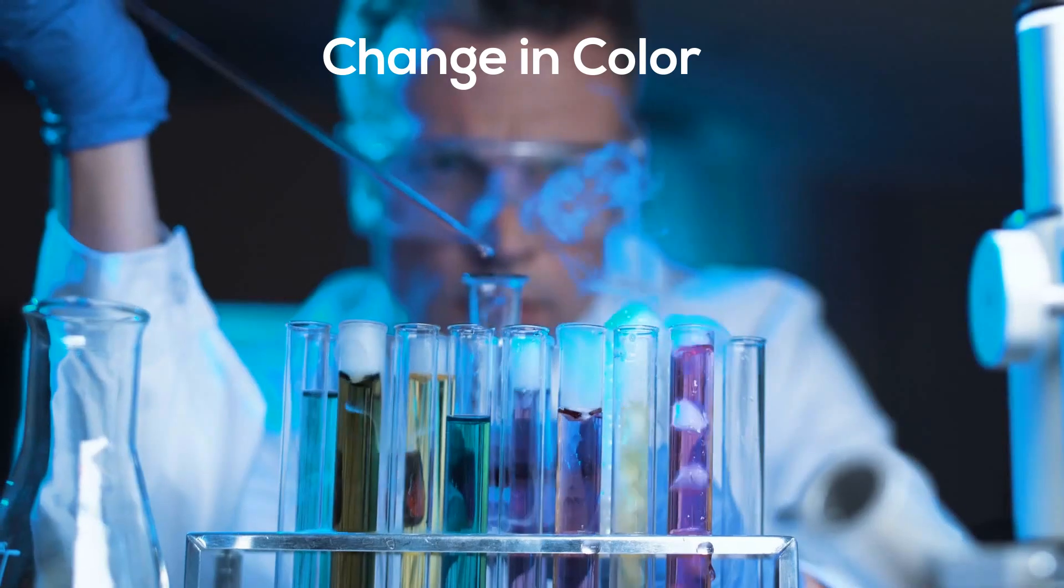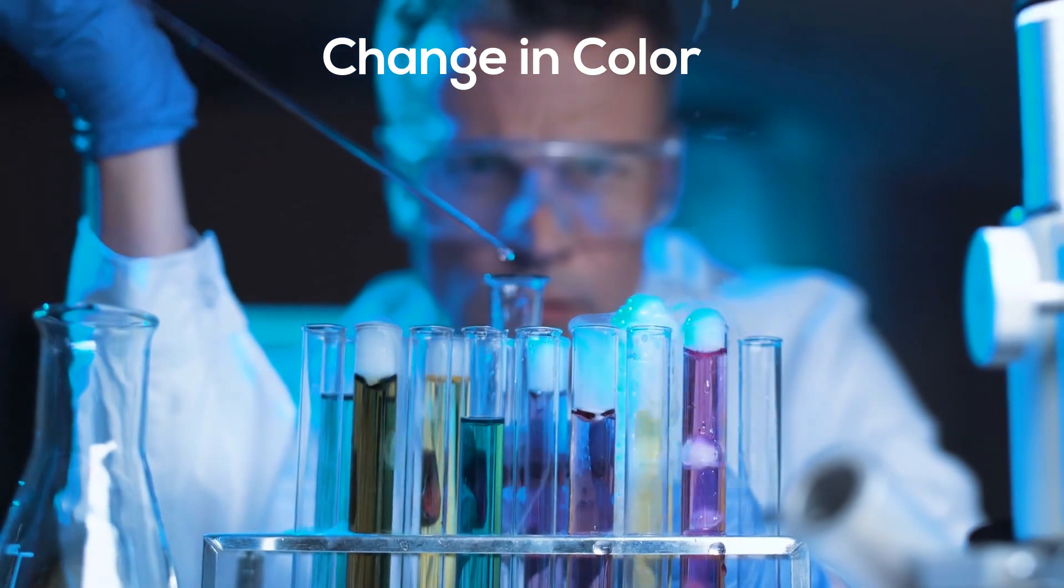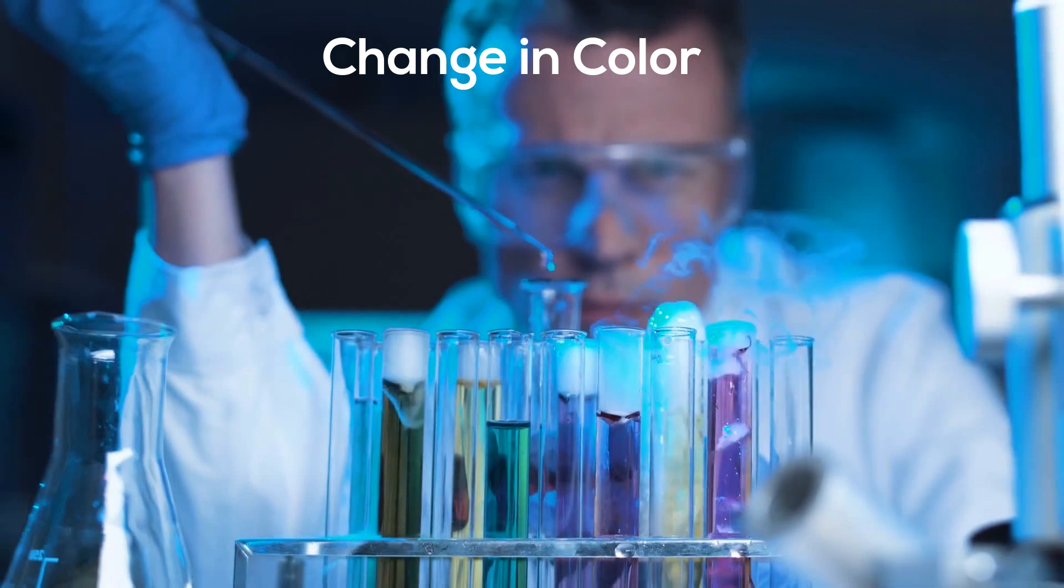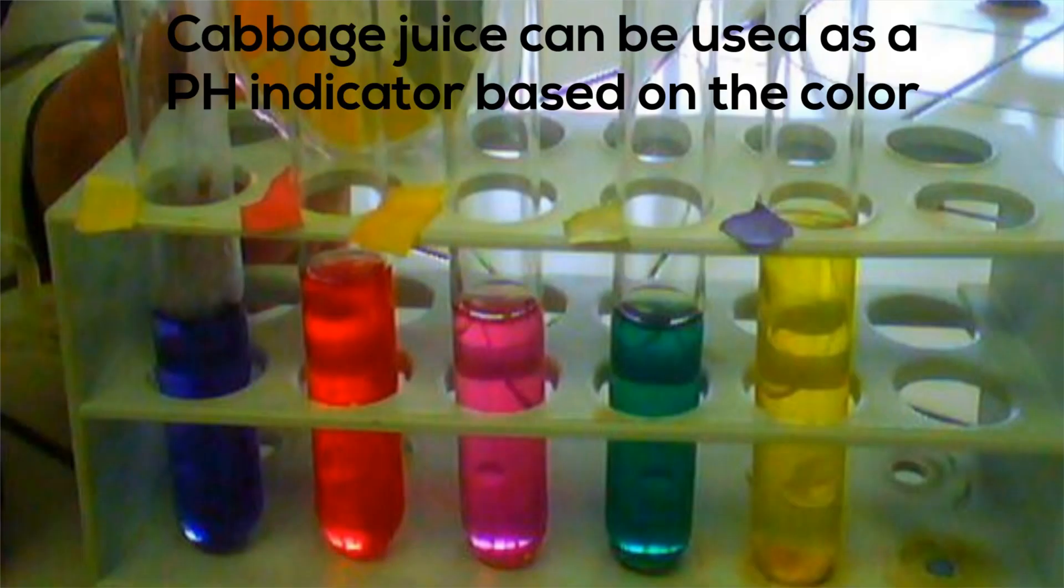A chemical reaction can cause a change in color. The change in color is permanent. Take a look at the different changes in color from the same cabbage juice when mixed with different chemicals. The color change is different based on the substance that it is mixed with.